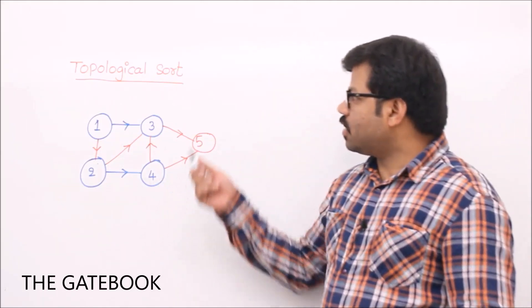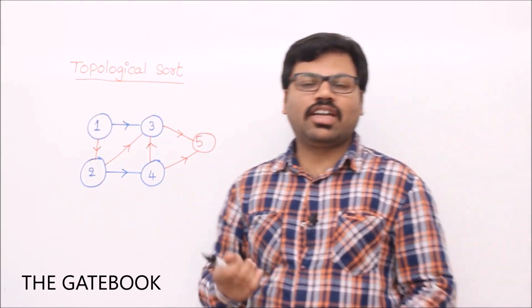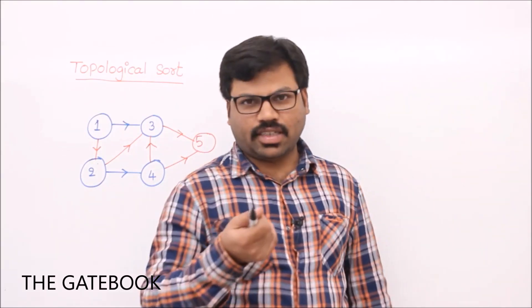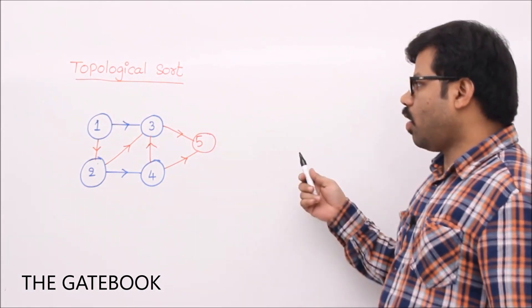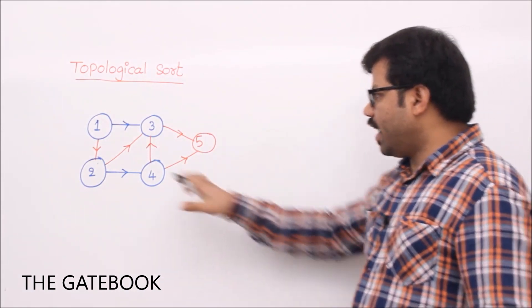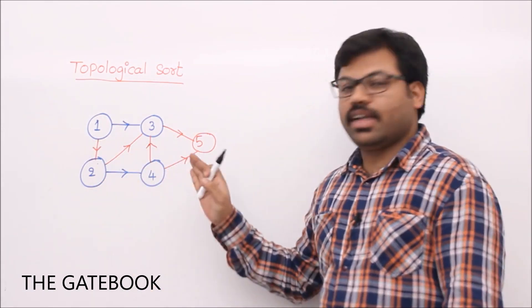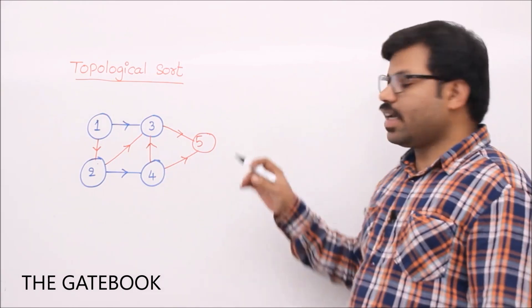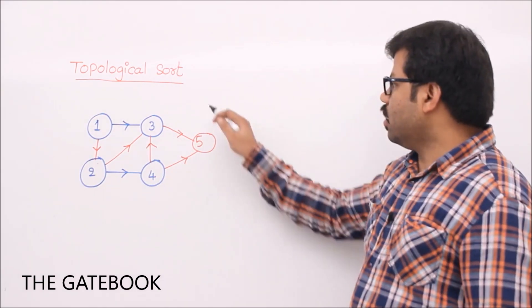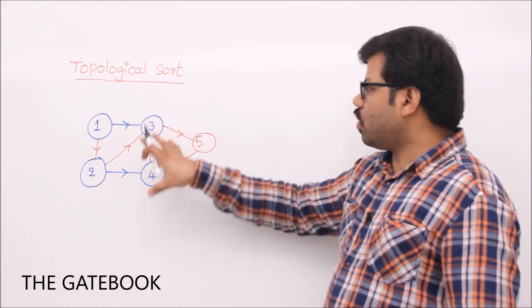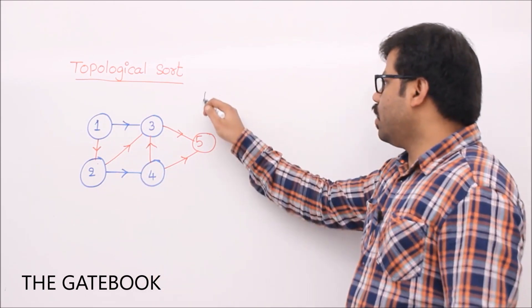We will see one more application of DFS: topological sort. Topological sort is very easy to understand. The topological sort problem is: you have a directed graph and it does not contain a cycle. If it has a cycle, we have to detect it first. So topological sort we apply only for directed acyclic graphs.